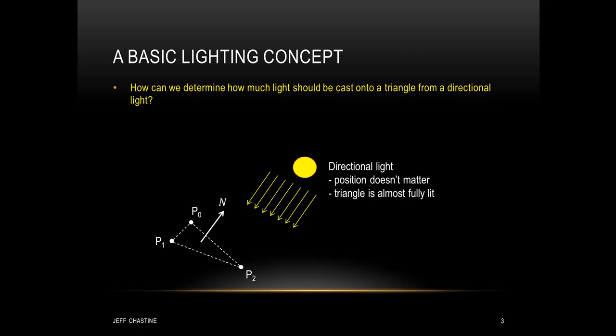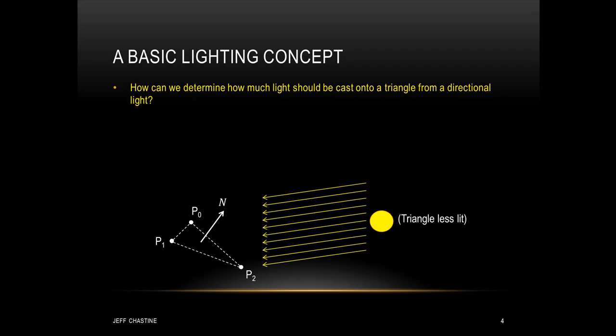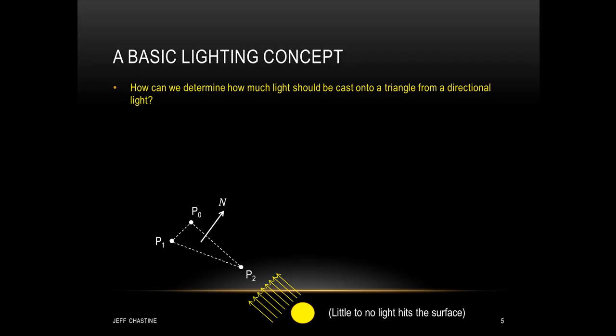Now because the light is coming from above, and the normal of this triangle is facing that direction, the triangle is going to be almost fully lit. As we change the direction of this light source so that it comes more from the side, the triangle is going to be less lit. If we were to change the direction so that it comes directly from the side, little to no light is going to hit the surface of this triangle.